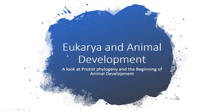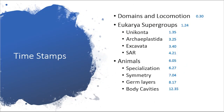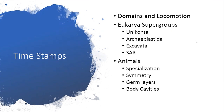In this video we're going to talk about the domain Eukarya and animal development, and how that's used in organizing and determining phylogeny of organisms. Here are some timestamps that will work as an outline for what this video aims to cover. We're going to briefly talk about the three domains and locomotion, then the Eukarya supergroups, and lastly animal development and how it's used to determine relationships.